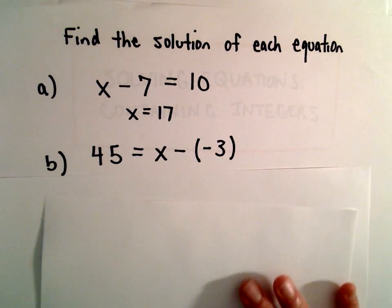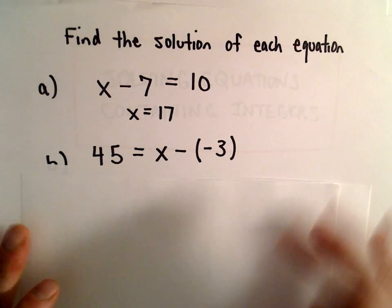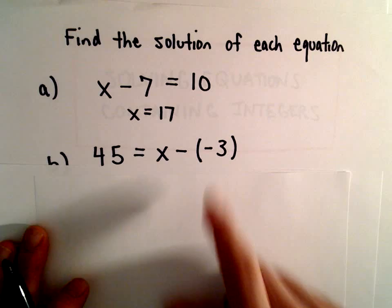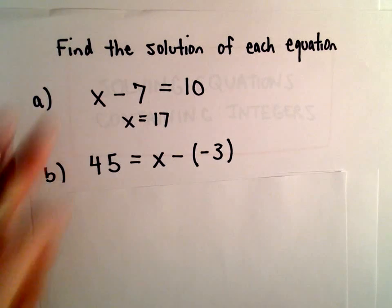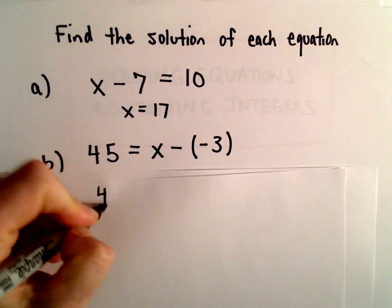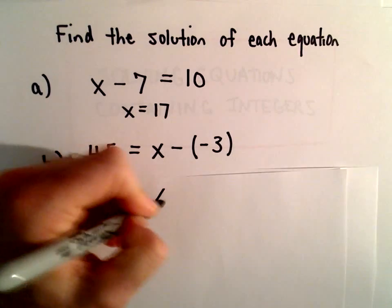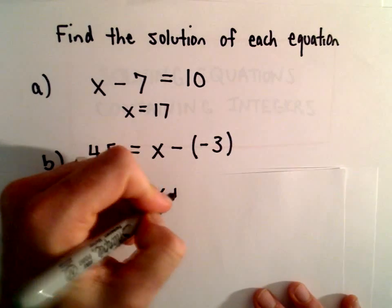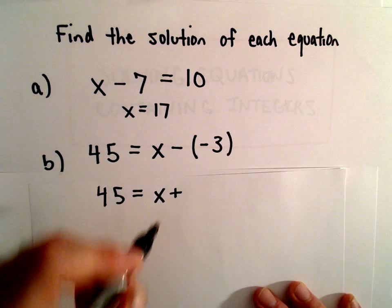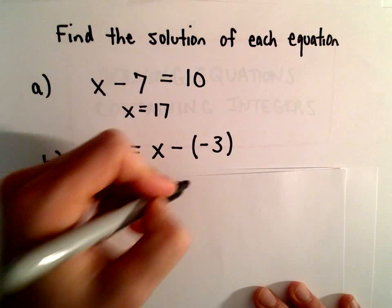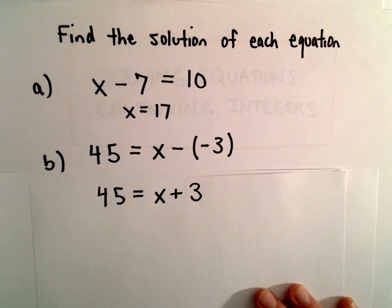For part B, we have 45 equals x minus negative 3. We can rewrite this. A negative multiplied by a negative is equivalent to a positive, so x minus negative 3 is just x plus 3.